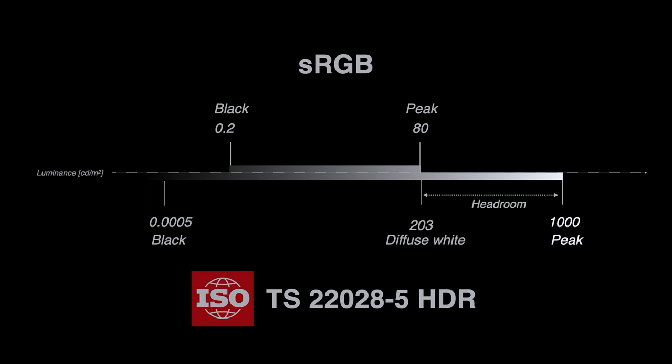Standards to the rescue. ISO technical specification 22028-5 is expected to be released this spring. Dash 5 provides a new reference display specification and color encoding for output-referred HDR still photographs. Compared to sRGB, notice the lower black level, higher peak level, and the definition of diffuse white. Nicolas Bonnier and I are project leaders of the ISO Digital Photography Committee.